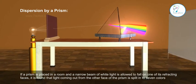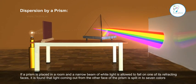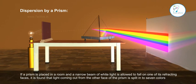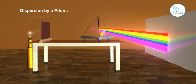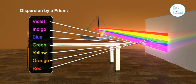it is found that light coming out from the other face of the prism is split into seven colors: violet, indigo, blue, green, yellow, orange, and red.